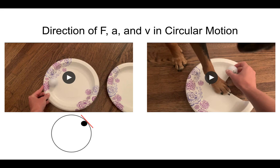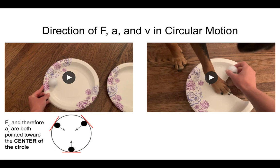The normal force is always perpendicular to the surface — in this case, the lip of the plate. As the ball moves around, the normal force changes direction, but it is always directed toward the center of the circle. Since acceleration is in the direction of net force, the centripetal acceleration is also directed toward the center of the circle. Both the centripetal force and centripetal acceleration are always pointed toward the center.